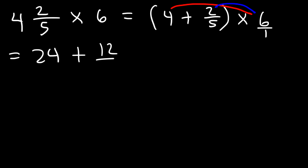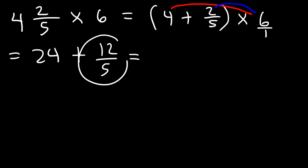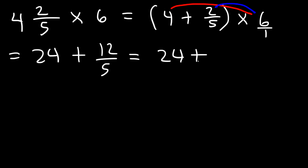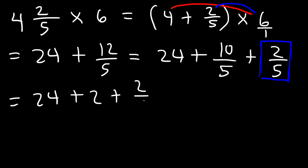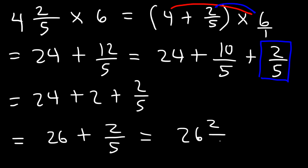2 times 6 is 12, 5 times 1 is 5, so we have 24 plus 12 over 5. Since 12 over 5 is an improper fraction, break it down: 12 over 5 equals 10 over 5 plus 2 over 5. The highest multiple of 5 under 12 is 10. 10 divided by 5 is 2, and 24 plus 2 is 26. So the answer is 26 and two-fifths.